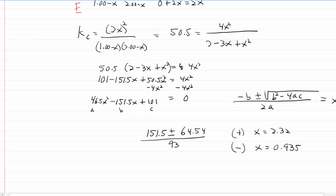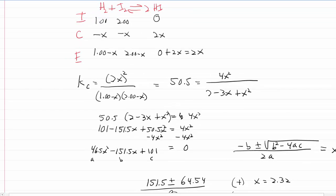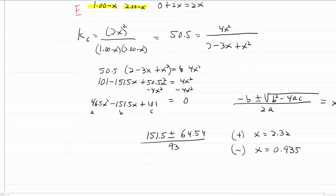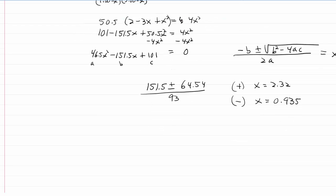Now if we look back at the original equation here, we've got a 1 minus X term and a 2 minus X term. Well, if X equals 2.32, then there's no way that's going to work. So we can eliminate this and say this is our workable root.